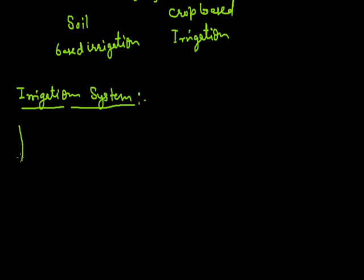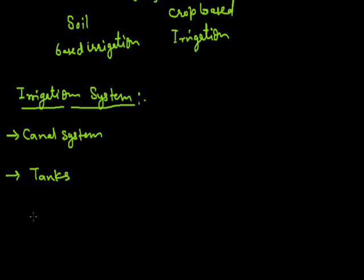Here we discuss some irrigation systems. The first is the canal system — canals are used to supply water to the main crop. The second is tanks, which are built up for providing water to the crop. The third is wells, which are also traditional. Wells are divided into two parts: the dug well, which is the traditional method, and the tube well, which is the modern method for irrigation.